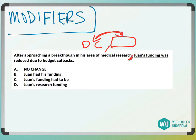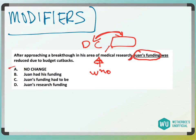Answer choice A sounds grammatically correct, but after 'approaching a breakthrough in his area of medical research,' we need to say who approached that breakthrough. Answer choice A suggests Juan's funding approached the breakthrough, and his funding didn't do that. So A would be wrong, and C would also be wrong for the same reason.